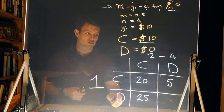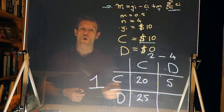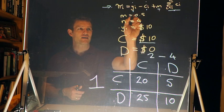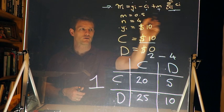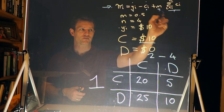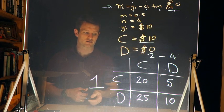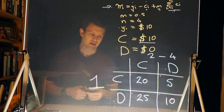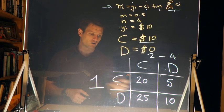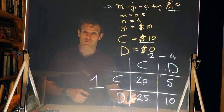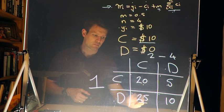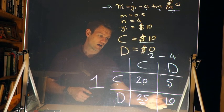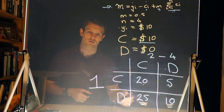Finally, if I don't contribute and no one else contributes either, we all just keep our ten dollars. In this case: y_i equals ten, c_i equals zero, the public good equals zero, and 0.5 times zero is zero — we're simply left with ten dollars.